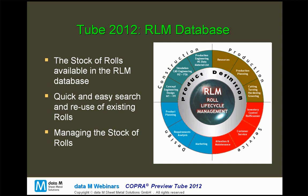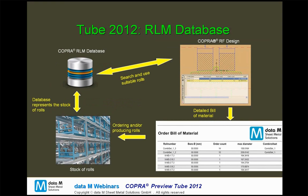The idea behind the RLM — Roll Lifecycle Management — database is to have the whole stock of rolls available in a database, enabling the designer to quickly search their stock and reuse existing rolls in future projects, or reuse rolls from old projects for future profiles. There are functions to manage the stock of rolls — checking out defective rolls, releasing them for reworking, and so on. The design department, construction department, production department, and service department all have access to the roll lifecycle management system.